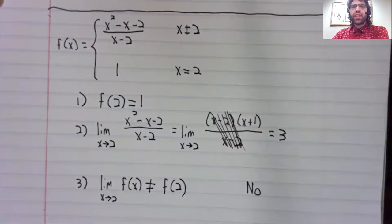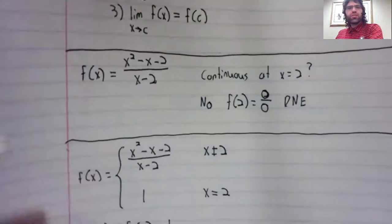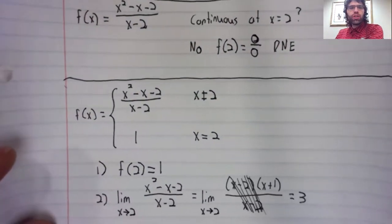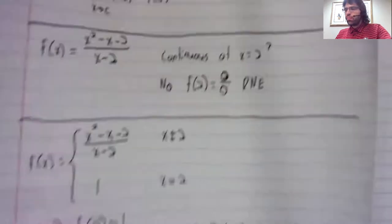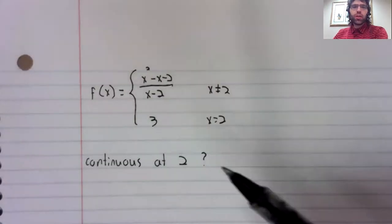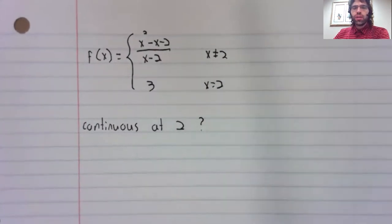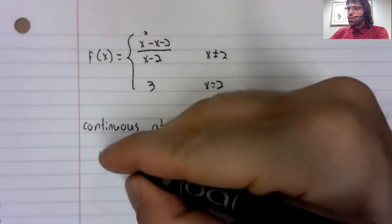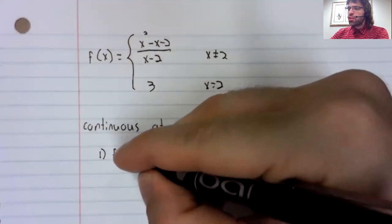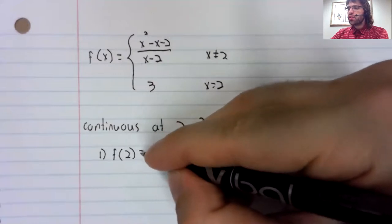One more example. This example is similar to the one we just did. But we have a different number here, three instead of one. This function is defined at two.